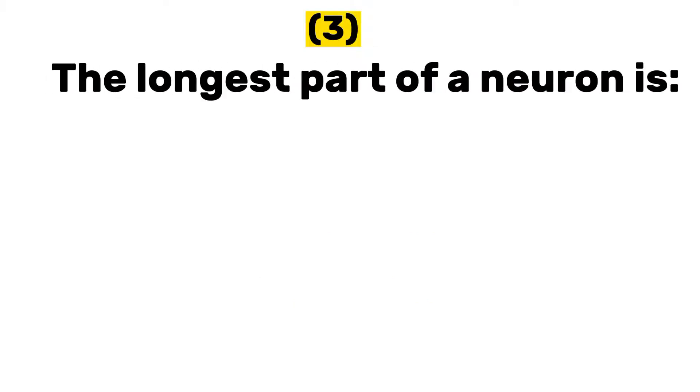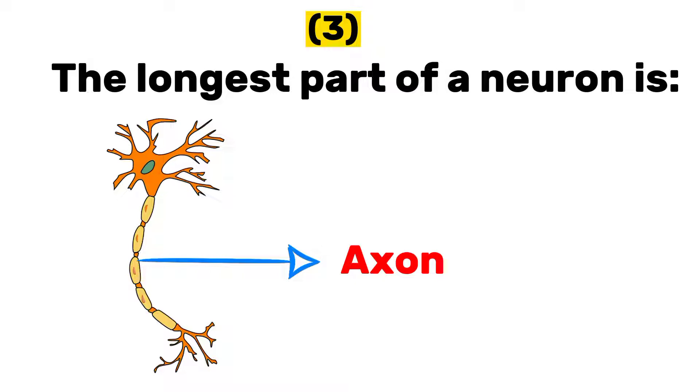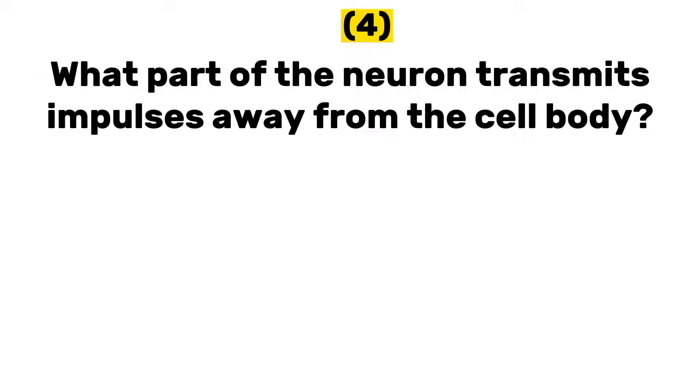Number three: the longest part of a neuron is? The answer is axon. So the axon is the longest part of a neuron. Number four: what part of the neuron transmits impulses away from the cell body?